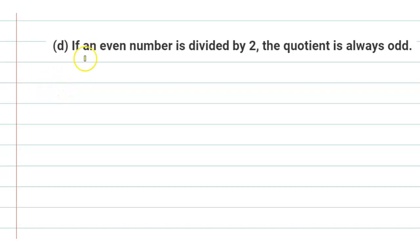Hello to everyone, welcome back to our channel. Today's question is: check whether this statement is true or false. The statement is, if an even number is divided by 2, the quotient is always odd.